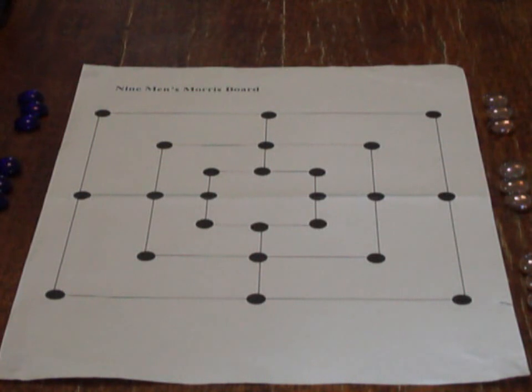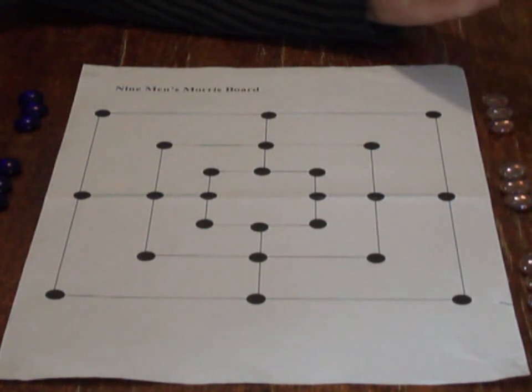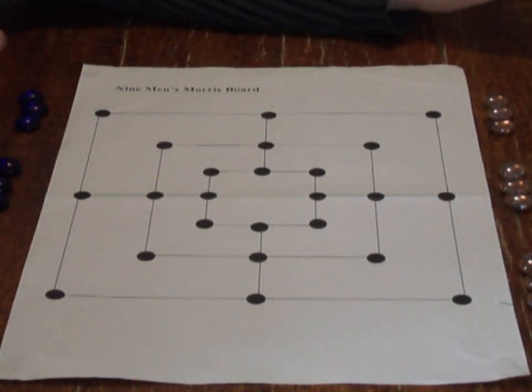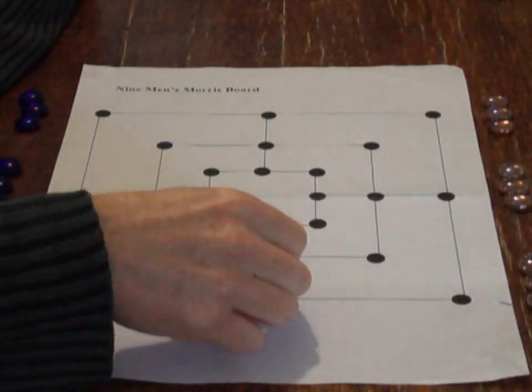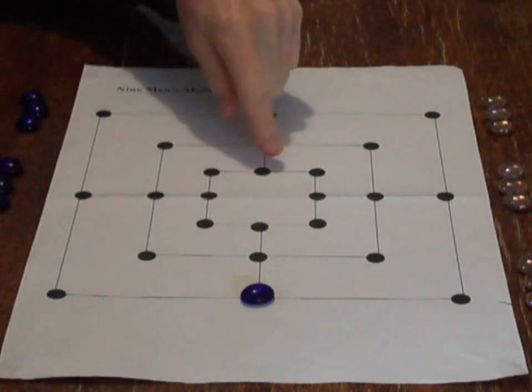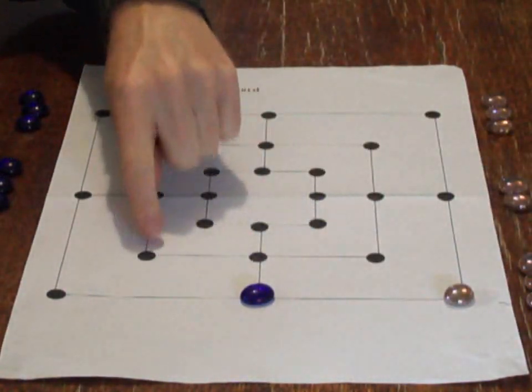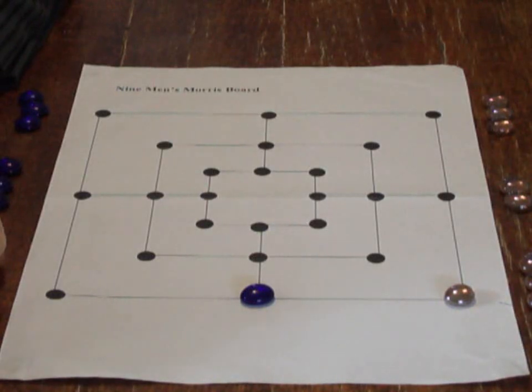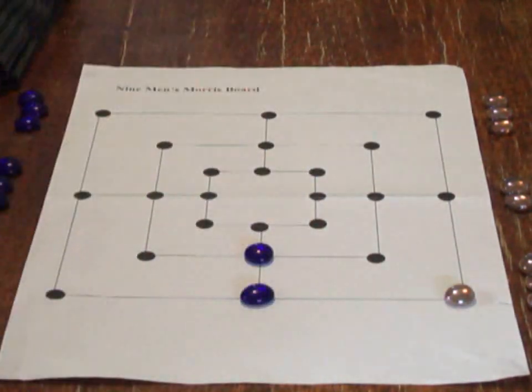At the start of the game, each team or player has nine pieces off the board, and the first stage of the game is to place your pieces onto the board one piece at a time, taking turns. So let's say blue starts. The placement of the pieces is on these spots. Any of the spots can be used.